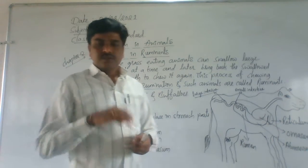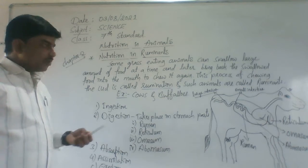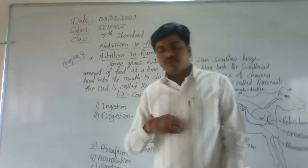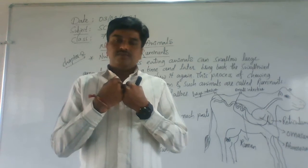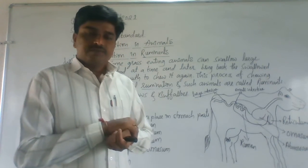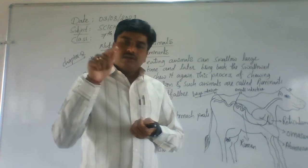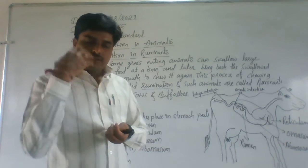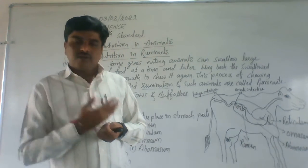Let us first look at ingestion. Ingestion means intake of food into the mouth. In ruminants, they swallow grass and break it down into simple pieces with the help of teeth. They have short canine teeth for tearing grasses into simple pieces. Saliva mixes with the broken-down food and makes it very soft.